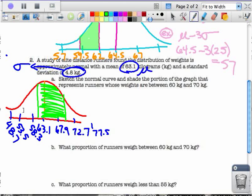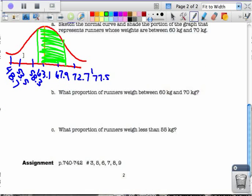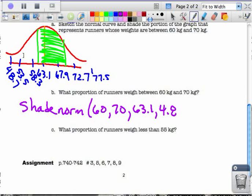Okay, so that part I always use a calculator for. Love it. So, 0.6655. And we used for that, we used shade norm 60, 70, 63.1, comma 4.8. And that equaled 0.6655, or you could have written 66.55 percent.